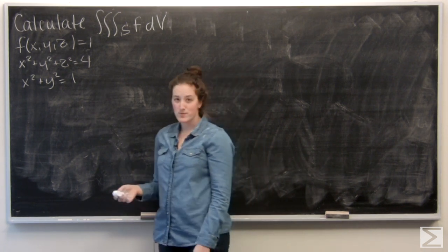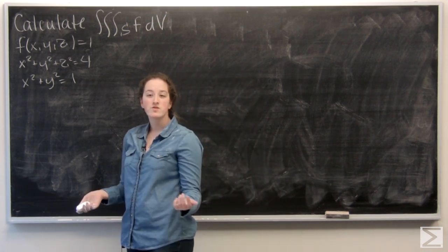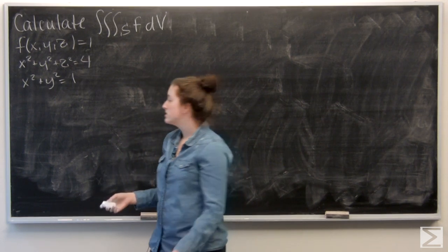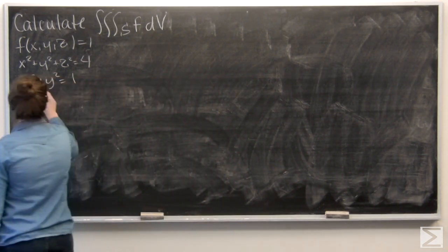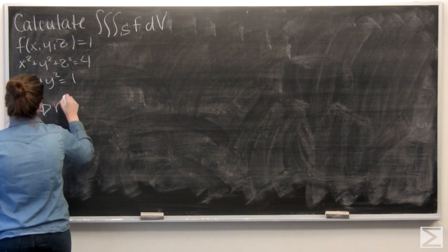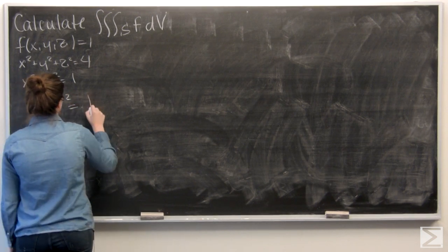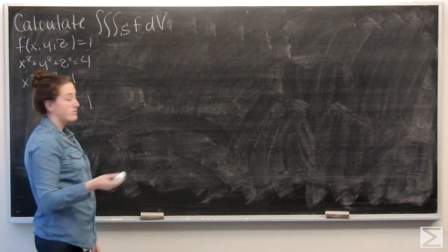So I'm going to start with x squared plus y squared. For cylindrical coordinates, x squared plus y squared equals r squared. So here, r squared equals 1, which means that r equals 1.